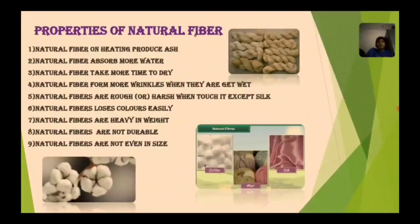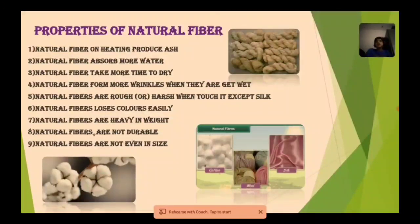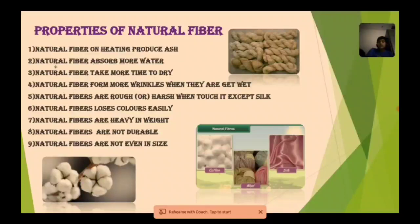Let us know about the properties of natural fiber. There are nine properties. Natural fiber on heating produces ash. It absorbs more water and takes more time to dry. They form wrinkles when they get wet. They are rough and harsh, except silk, which is smooth compared to other natural fibers. Natural fibers lose their color easily. Natural fibers are heavy in weight, not durable, and not even in size. You can see here pictures of cotton plant, cotton, wool, silk, and jute.